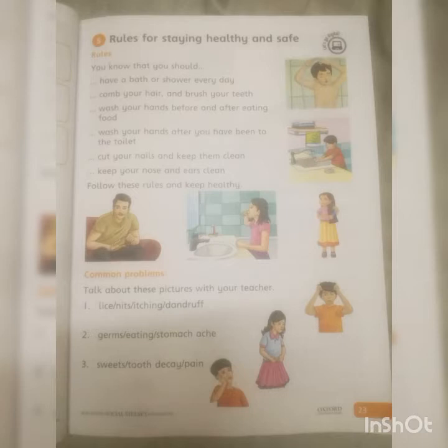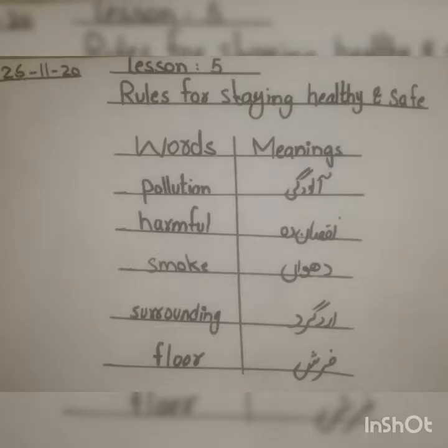Before we start reading, I would like to introduce you to some new words and their meanings. Number 1: pollution — it means aloodgi. Number 2: harmful — means nuksande. Number 3: smoke — it means dhuang. Number 4: surrounding — erdgir. And number 5: floor — means farsh.